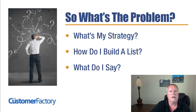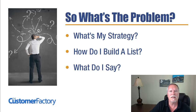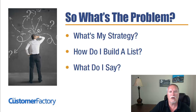They always say that the money is in the list. How am I going to build a list with Constant Contact Toolkit? And in terms of my content, what am I going to say? What sort of offers should I put together? What should I say in my email newsletters? How often should I send them out? Who should I be targeting? There are a lot of questions from a strategic side that you may still be confused about.